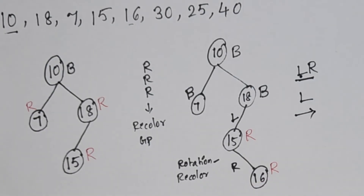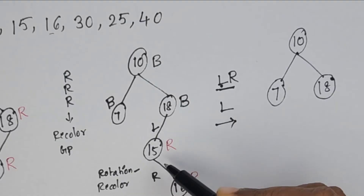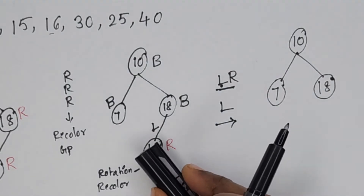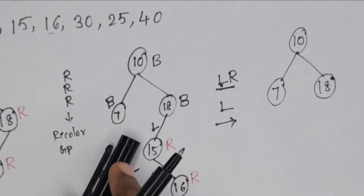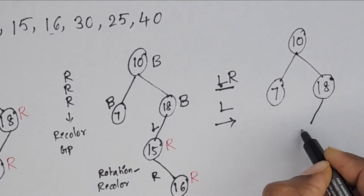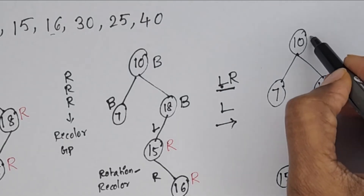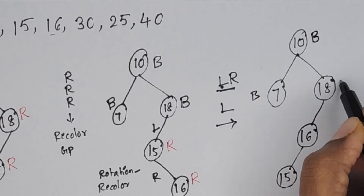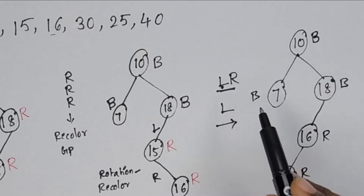For the L rotation, we do not move 18; the remaining nodes (15 and 16) are rotated left. When rotated, 16 goes up. Now 16 is the left child of 18, and 15 is the left child of 16. Colors remain as they are: 10 is black, 7 is black, 18 is black, 16 is red, and 15 is red. This completes the first rotation.